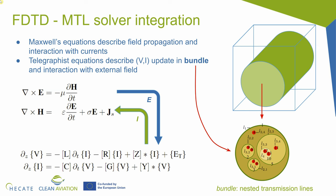It's important to note that we're not working with individual wires, but with bundles. Imagine we have a wire inside our three-dimensional domain — this will not be just a single wire; we call this a bundle. A bundle is a series of nested transmission lines that can have inside any combination of other transmission lines — so you can have single wires, other wire bundles, shields, and so on.